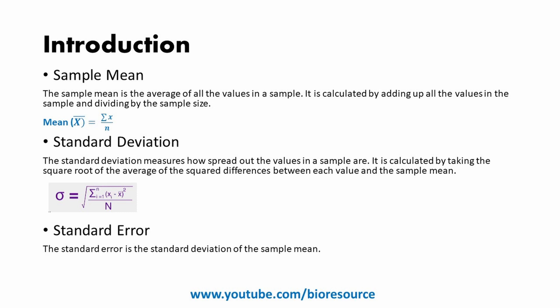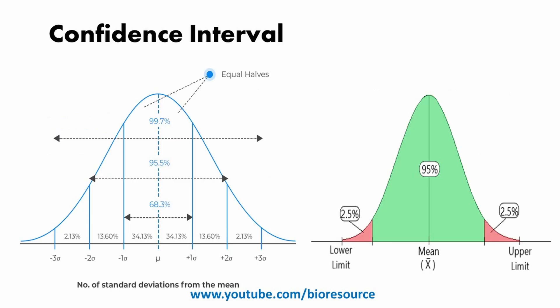The margin of error is the range of values above and below the sample mean that we are confident the true population mean lies within. It is calculated using a formula that takes into account the sample size, standard deviation, and desired level of confidence. Interpreting the results involves understanding what the confidence interval tells us about our data.